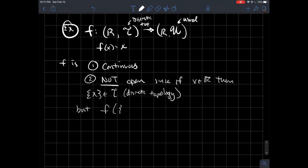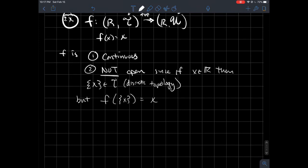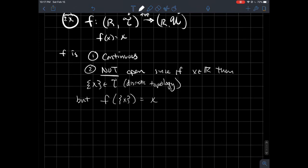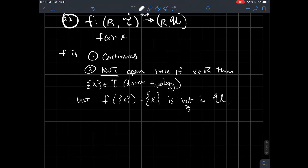But f of the singleton x, that's kind of silly. It's just x. Now what am I looking at? Well, if I applied x to this thing, now I'm over on the usual copy of the real line that I'm used to thinking about with open intervals and whatnot. But f of x equals x. In this case, its image, maybe I'll write it as a set too, is not in fancy U.